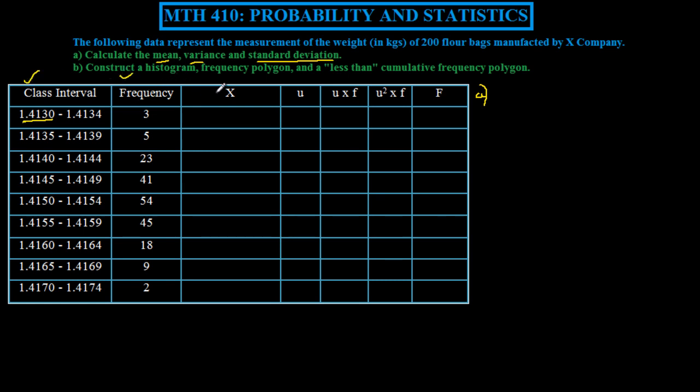The question is given with these two columns here, but I would advise you to add these next five columns to your table and fill them out. Then have your net uf and net u squared f. Once you get these values, you can apply the mean formula and the variance formula to calculate those values.